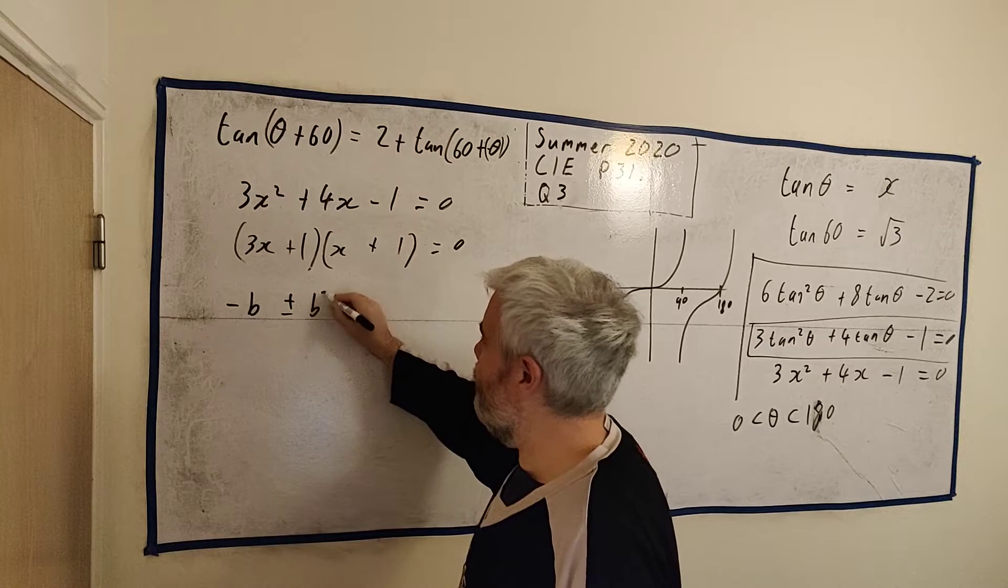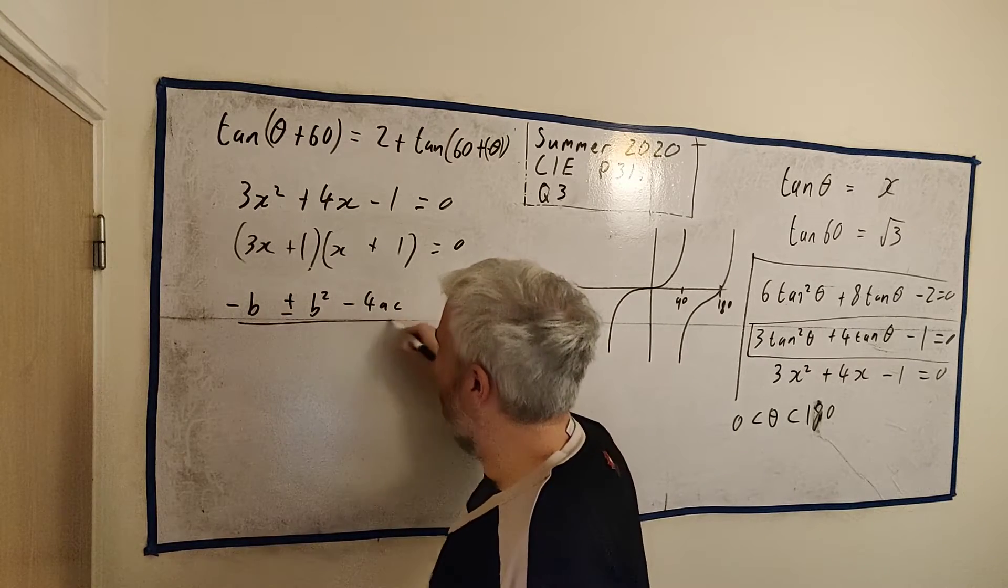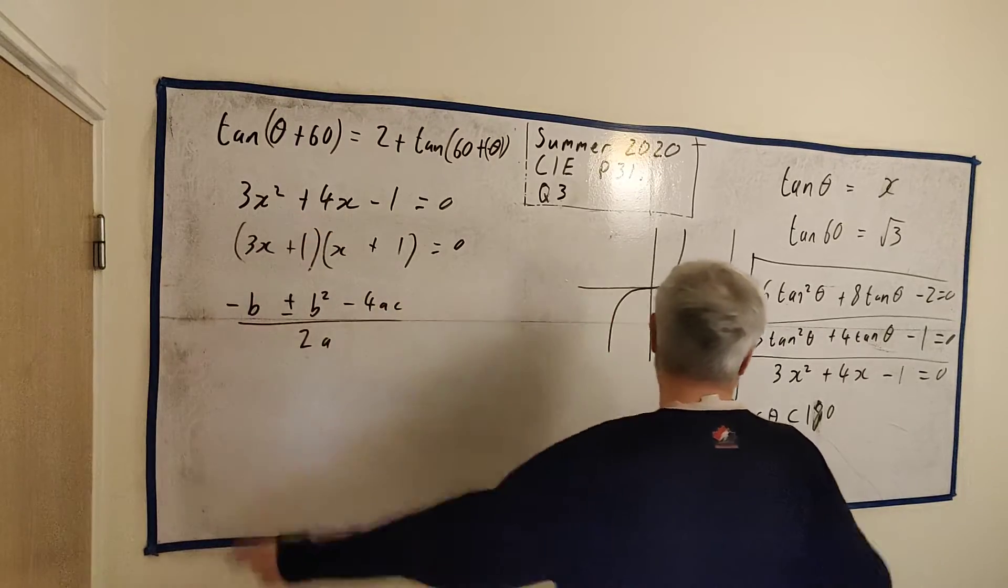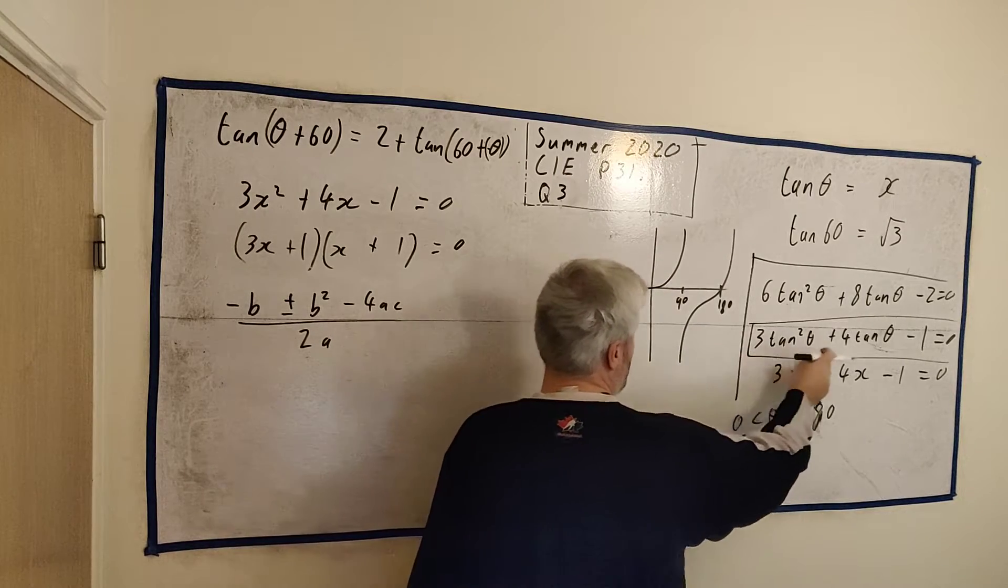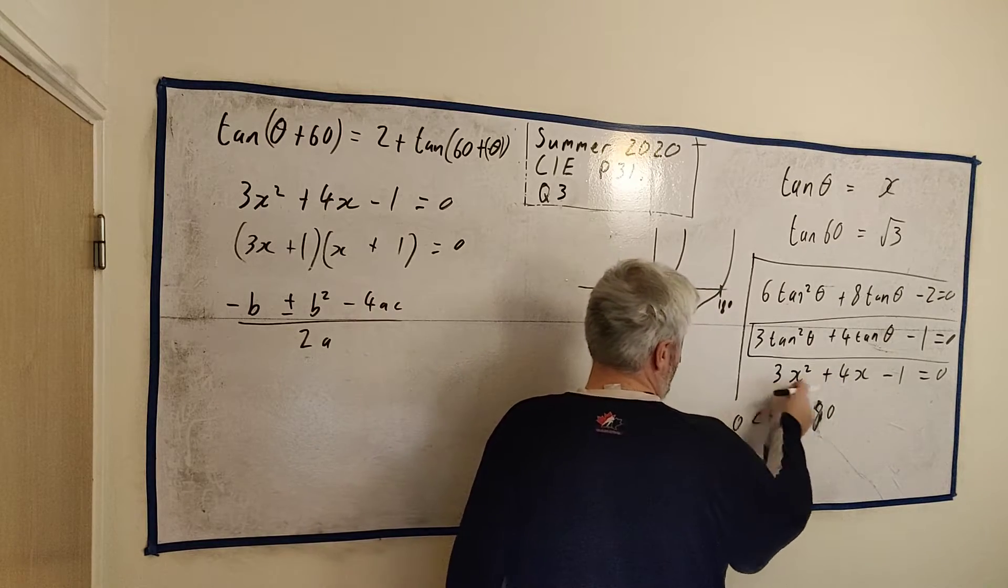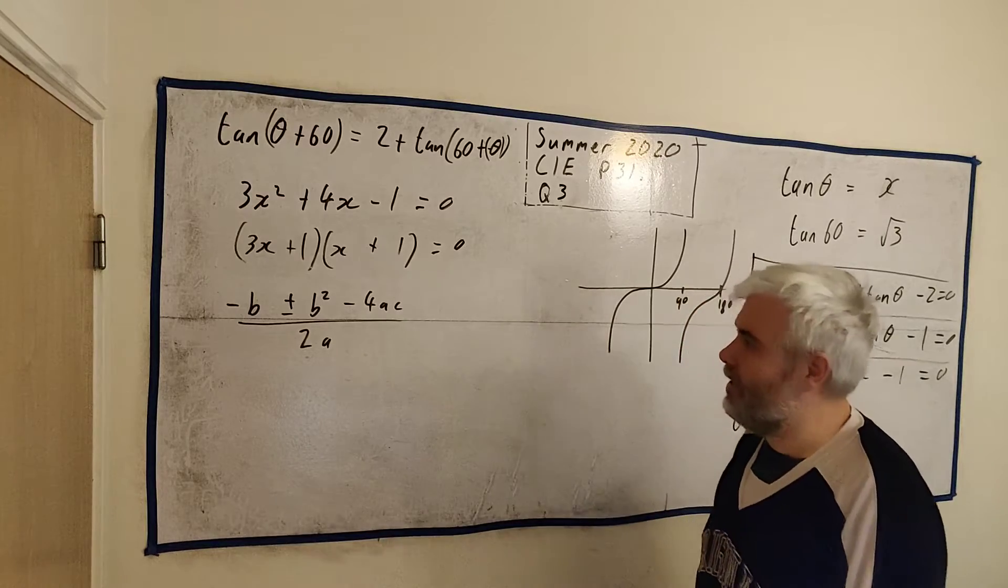So I'll just go ahead and use the formula. -b ± √(b² - 4ac) divided by 2a. Now it doesn't matter if we use the one with x's or this one here. This one here, a is 3, b is 4, c is -1. And again, with the x's, it's 3, 4 and -1. No difference. So we can get rid of the x's at this point.